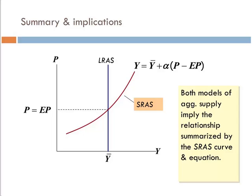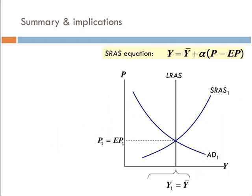Long-run equilibrium is where the price level equals the expected price level — in both models, this is our long-run equilibrium condition. At all points on the short-run aggregate supply curve where output is above potential, price is above expectations. Where output is below potential, price is below the expected price level. In long-run equilibrium, the actual price level equals the expected price level, and output equals the natural rate of output.